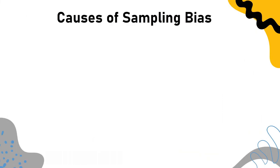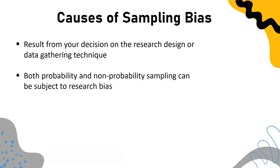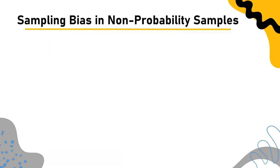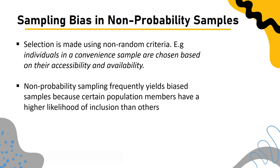Causes of sampling bias: Sampling bias can result from your decision on the research design or data gathering technique. Both probability and non-probability sampling can be subject to this kind of research bias. In non-probability sampling, the selection is made using non-random criteria. For example, individuals in a convenience sample are chosen based on their accessibility and availability, frequently yielding biased samples because certain population members have a higher likelihood of inclusion than others.